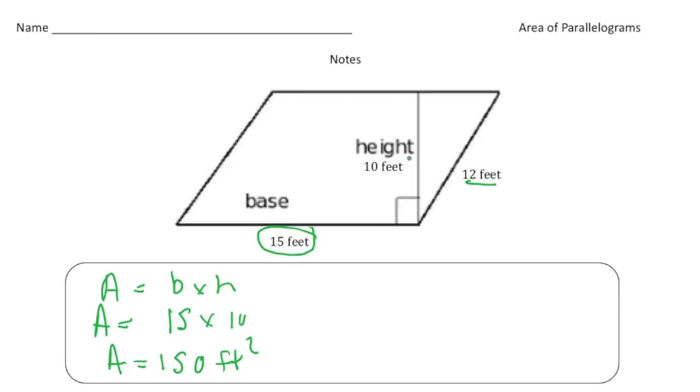The big thing about this is knowing the formula, but then being able to identify the height. And again, the height goes straight up. Notice this has an angle here, so that is not the height of the parallelogram. Height goes straight up and makes that right angle with the base.